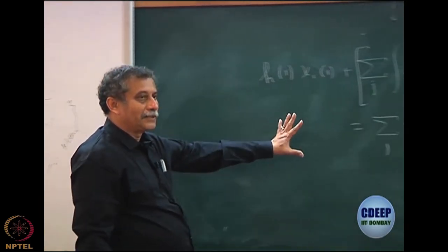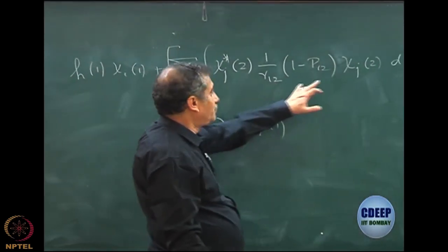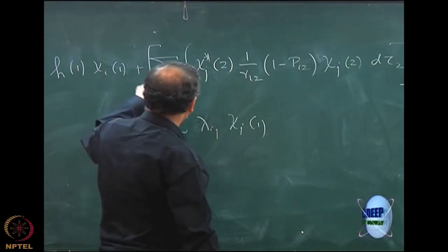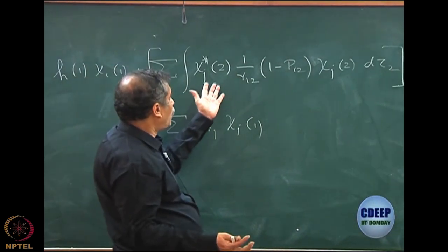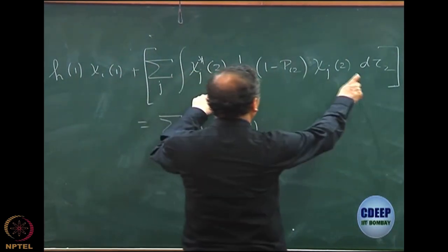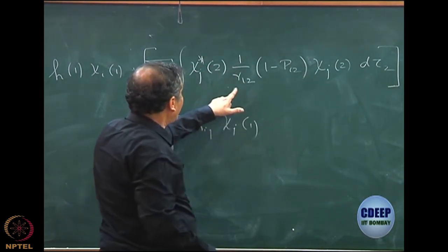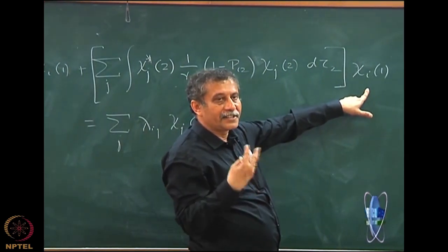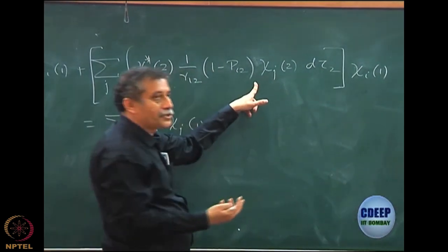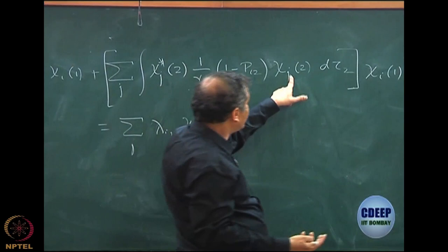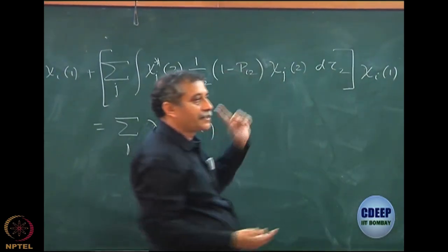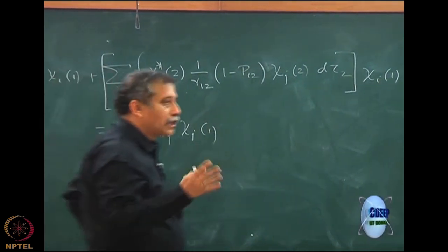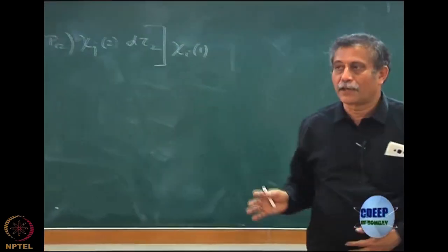This is your Hartree-Fock equation in non-canonical form. Anyone asked should be able to write this — it is very simple. You have a Coulomb term which comes from the density of electron 2 in chi j, and you are summing over J, meaning you are taking the interaction over all the electrons. When integrating over d-tau 2, chi j star chi j with 1/r12, you get an effective one-particle interaction on the electron in chi i orbital — that is the interpretation of the classical term. The exchange term is not easy to interpret because when P12 acts, chi i goes outside the integration and chi i comes inside.